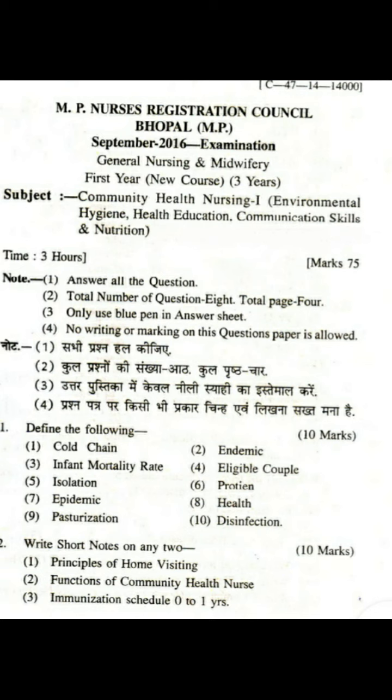Question number 1 carries 10 marks. Define the following: first, cold chain; second, endemic; third, infant mortality rate; fourth, eligible couple; fifth, isolation; sixth, protein. Also define epidemic, health, and disinfection.